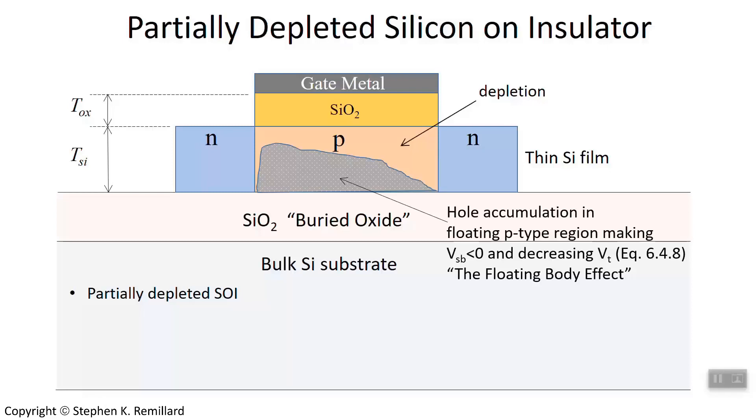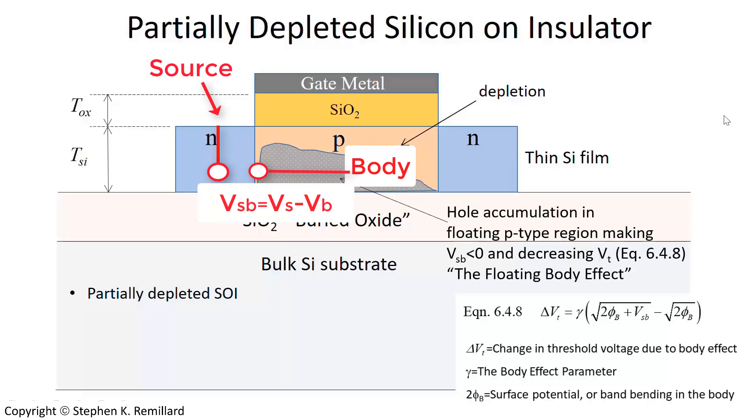There is no ground now as the body normally is in a larger scale MOSFET. The potential from the source over here to the body is actually negative because now the body is going to be at a higher potential, and so V_SB is a negative number. And if you inspect equation 6.4.8, you will realize that means that the threshold voltage goes down. That is referred to as the floating body effect.